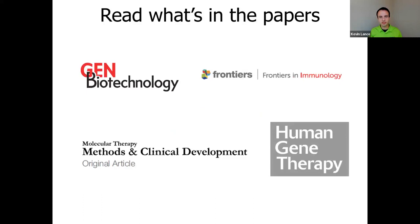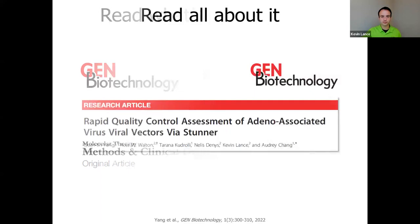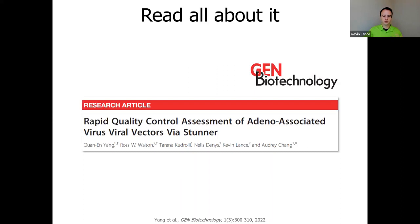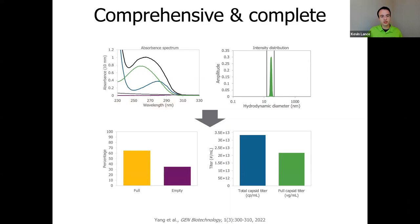Next I want to look at what published work is being done with Stunner on AAV. We'll look at papers published in four journals. First, a paper published in Gen Biotechnology using Stunner as a rapid QC tool for downstream purification and manufacturing. The paper begins with an overview of evaluating the basic outputs of Stunner: using UV-Vis to understand total amounts of DNA and protein, using DLS for size and size distribution to avoid aggregation, and looking at full, empty, and total capsid titers together.